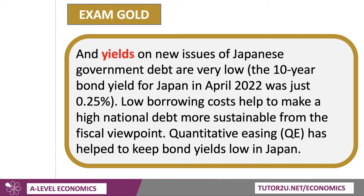And the yield on debt is also low. So it's perfectly possible to have a high level of debt. But the key question really is: what's the interest rate on that debt? As of April 2022, the 10-year bond yield for Japan was just 0.25%. In other words, the government could borrow money for 10 years at a nominal interest rate of 0.25%. That's very low. Low borrowing costs help to make a higher national debt more sustainable from a fiscal point of view.